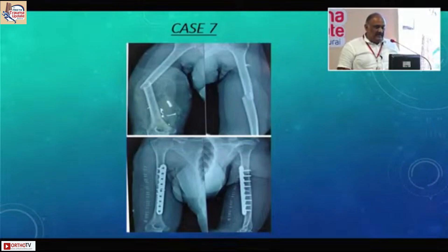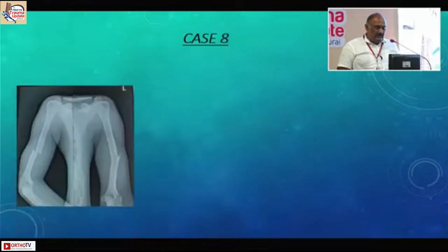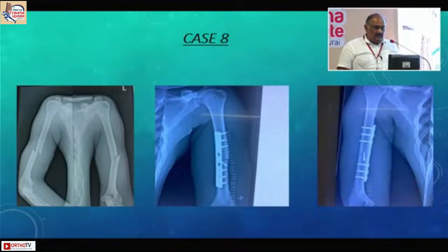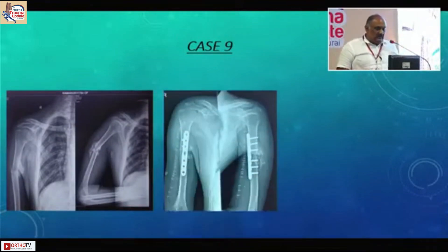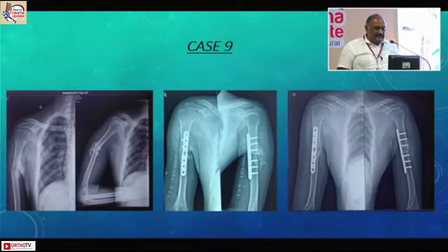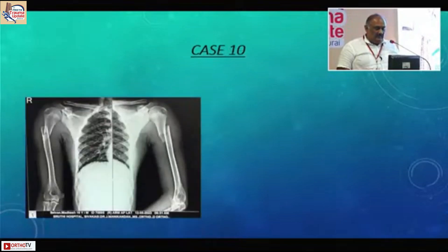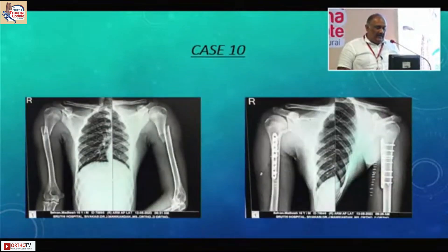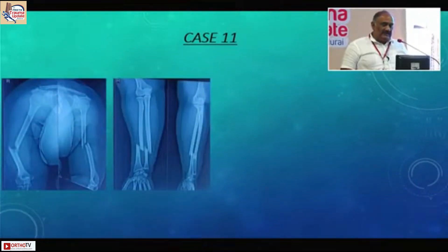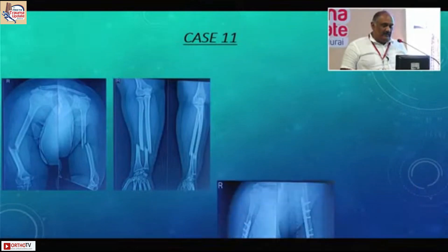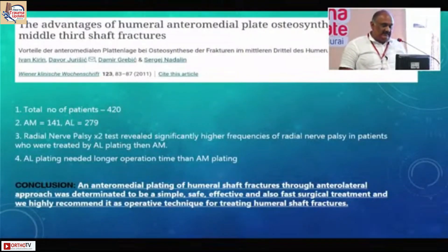Here are additional anteromedial plating cases. This is a case of delayed union also treated with an anteromedial plate, with excellent clinical results at the end. This is a young male with a humerus fracture — even though it was in the upper segment where lateral plating might be used, I still did anteromedial plating with good results.